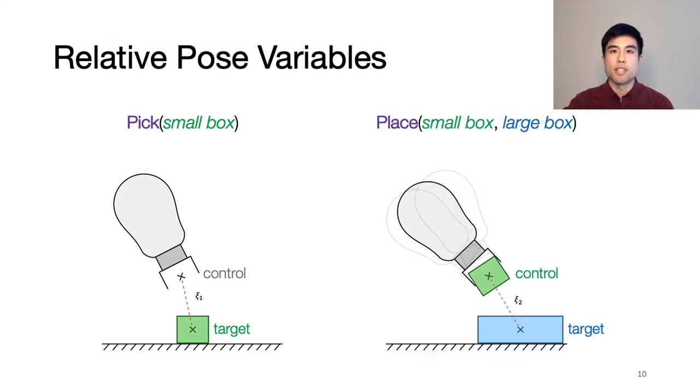When we want to place the small box on the large box, the pose variable represents the pose of the small box relative to the large box. In this way, it doesn't matter how we picked up the small box in the previous time step, since what we're controlling is the small box relative to the large box, and the configuration of the small box in the end effector is irrelevant. This means that our pick and place actions are decoupled from each other, and this makes planning over long horizons easier.